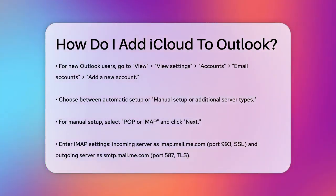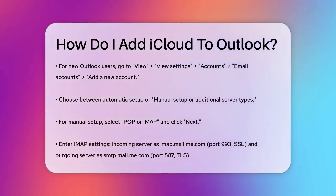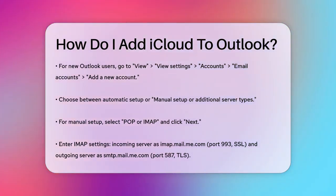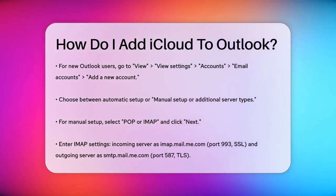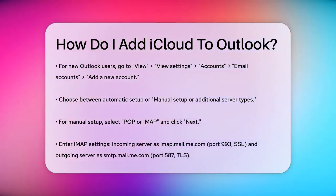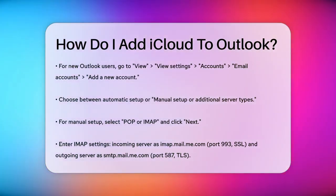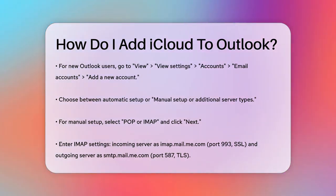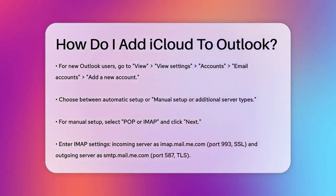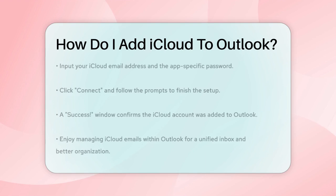For IMAP settings, enter the incoming server as imap.mail.me.com with port 993 and SSL encryption. For the outgoing server, enter smtp.mail.me.com with port 587 and TLS encryption. Enter your iCloud email address and the app-specific password you generated earlier.